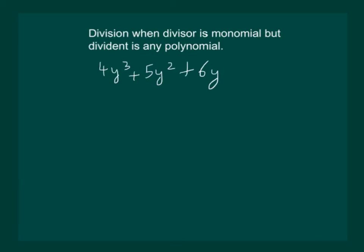And suppose we have to divide it by 2y. 2y is a monomial. This can be written as 4y cube plus 5y square plus 6y whole divided by 2y.